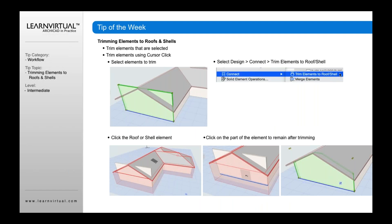You can also trim elements using what's called the cursor click option. This is particularly helpful when, for example, all the other walls in your project are already trimmed, but you've made some changes or added a new wall and you need to trim just that wall without going through the process of trimming all walls. In this case, you select just that one wall.